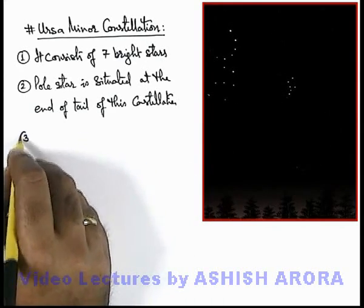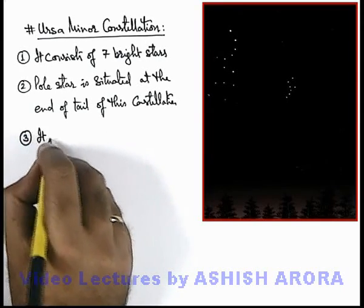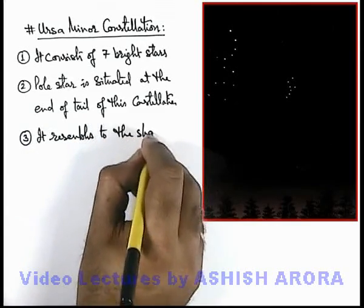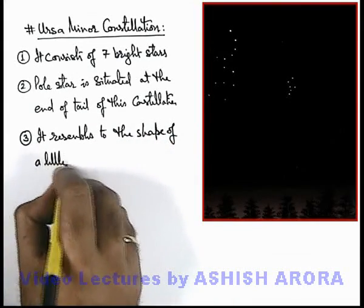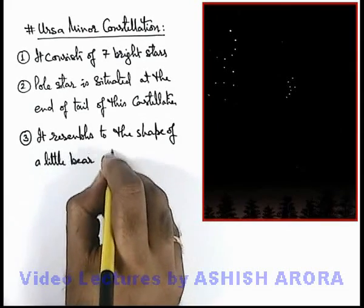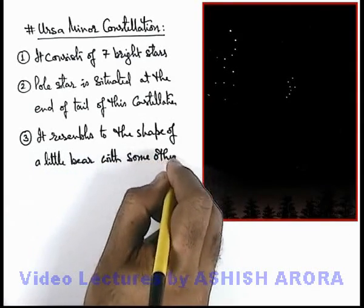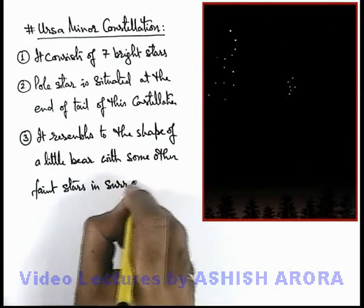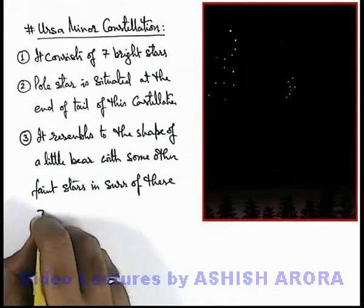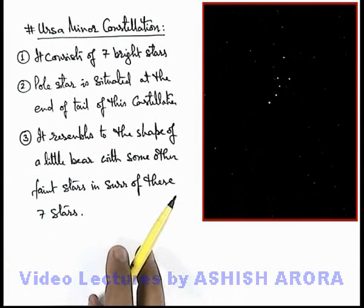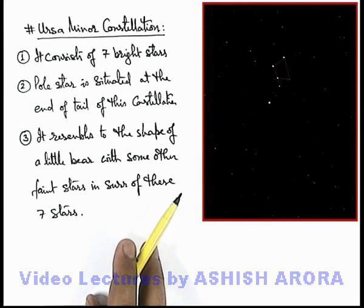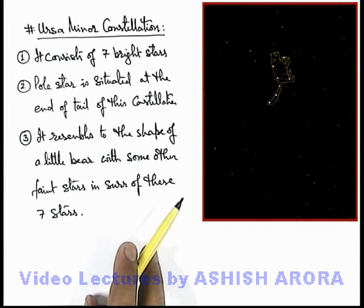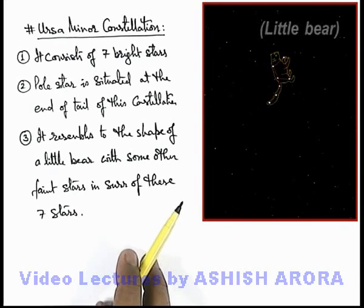About this Ursa Minor constellation, we can say it resembles the shape of a little bear, with some other faint stars in the surrounding of these 7 stars. Here we can see that if we join these 7 stars and a few more faint stars in the surrounding, the overall shape looks like a small bear with its tail in an upward direction.